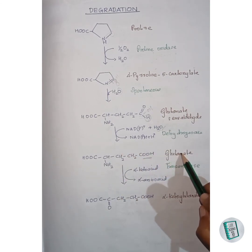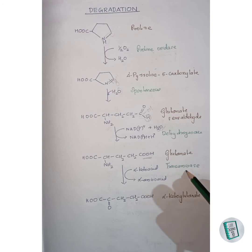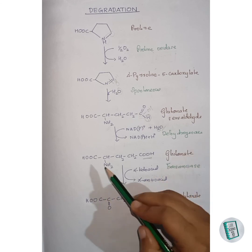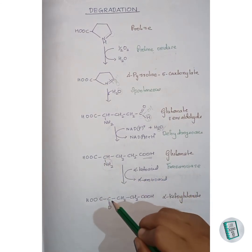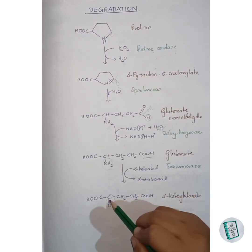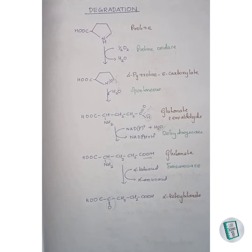This glutamate then undergoes transamination in the presence of a transaminase enzyme to form alpha-ketoglutarate. Here, the amino group gets replaced by a keto group, and thus alpha-ketoglutarate is formed. This completes the degradation of proline.